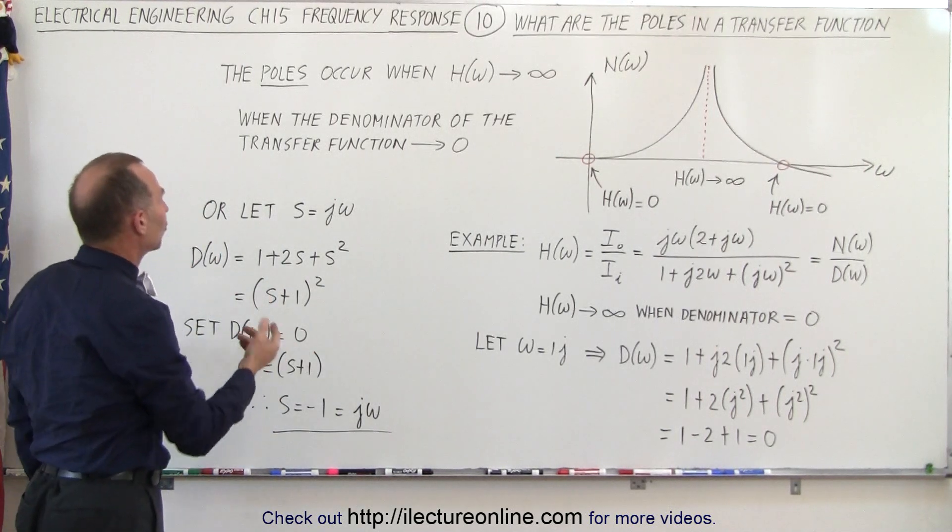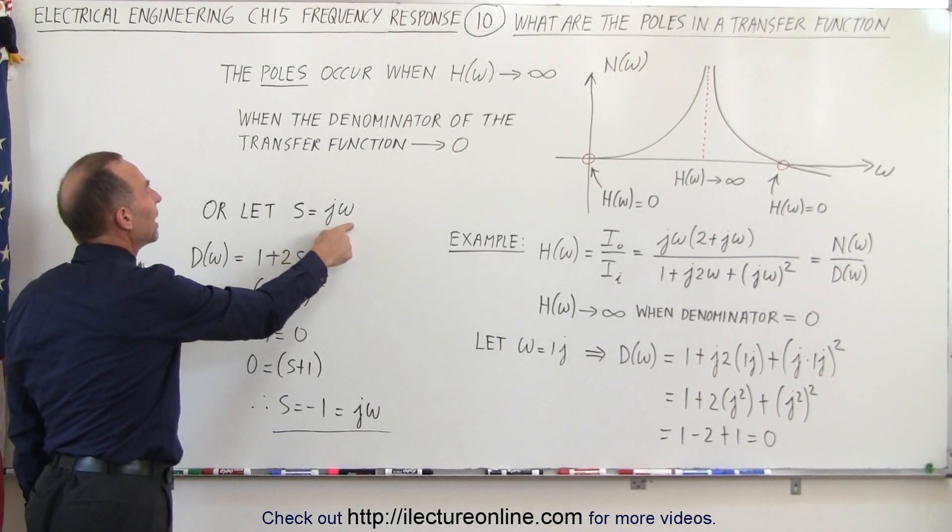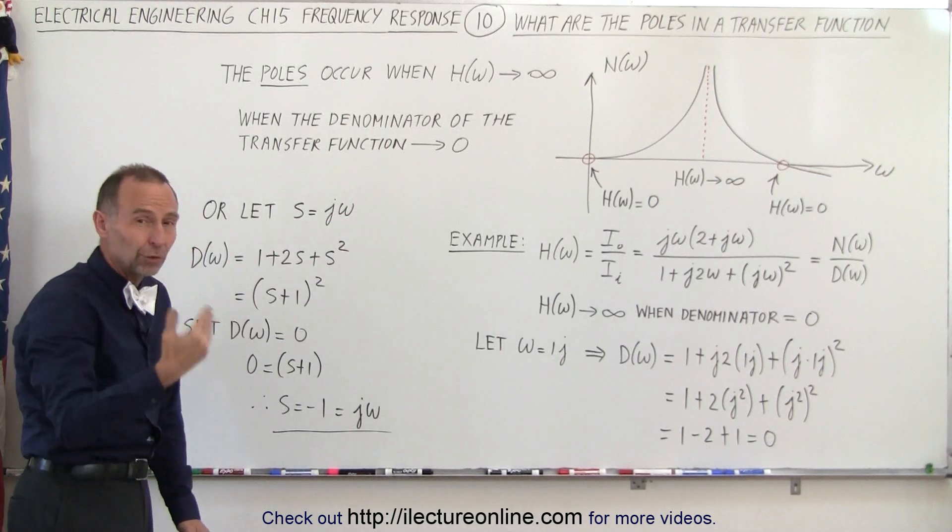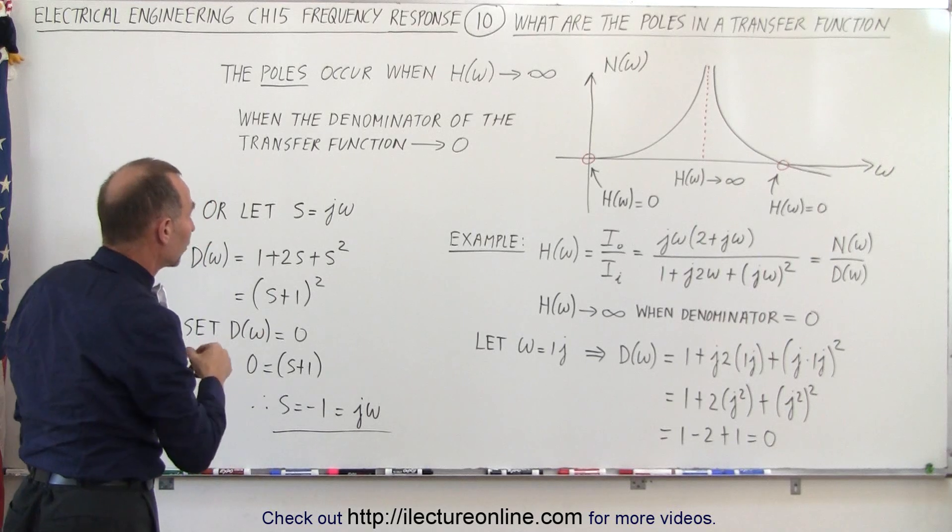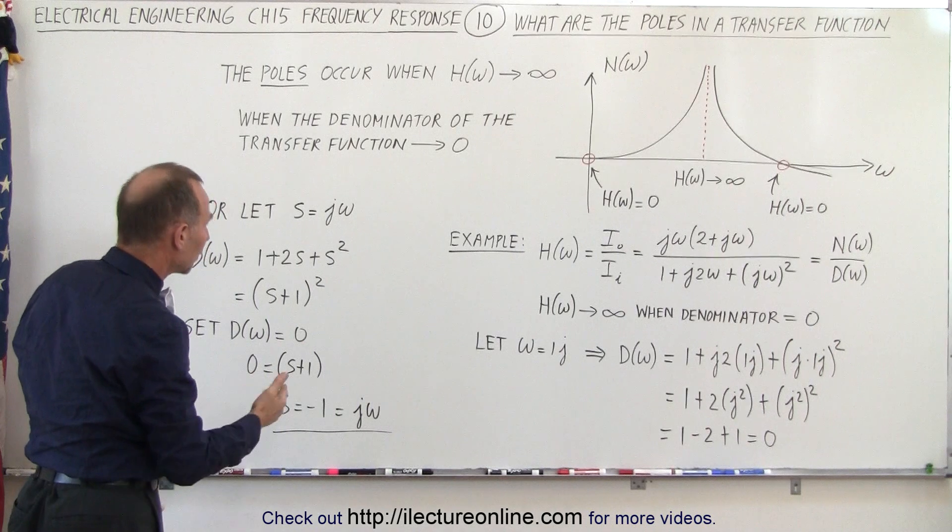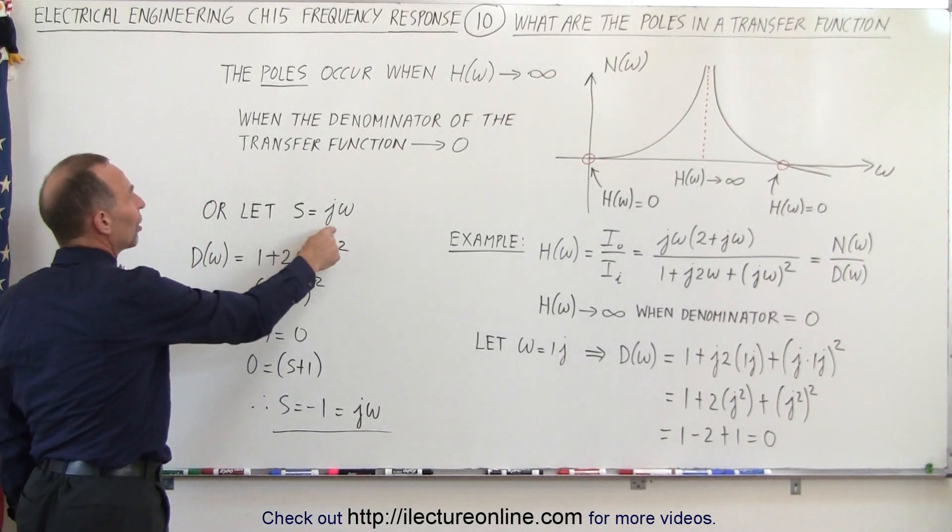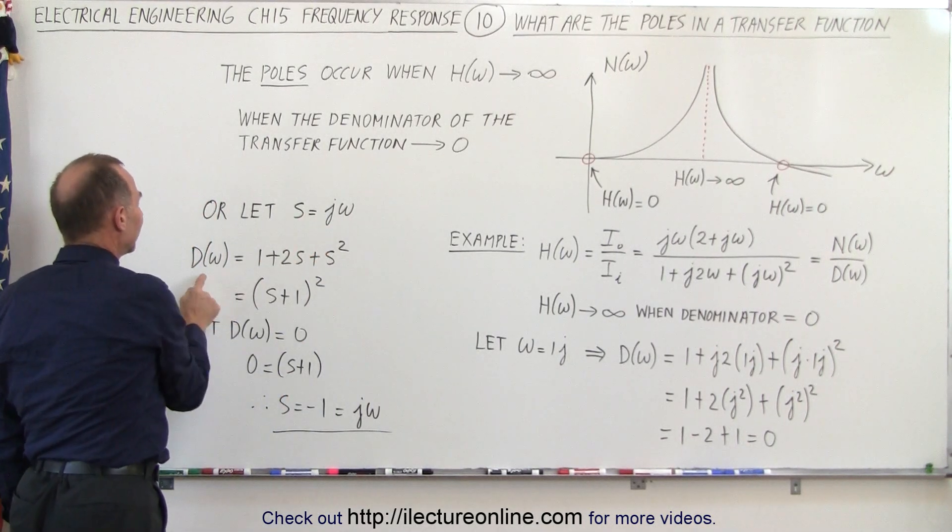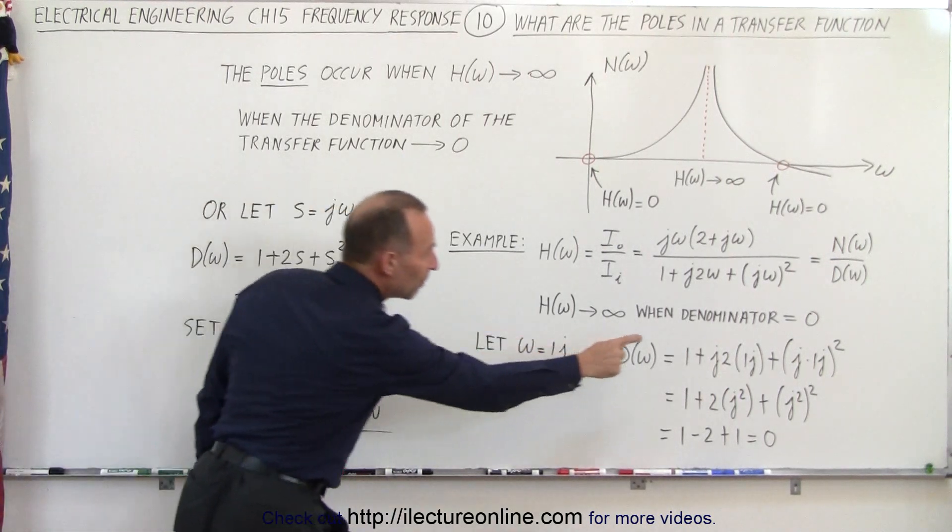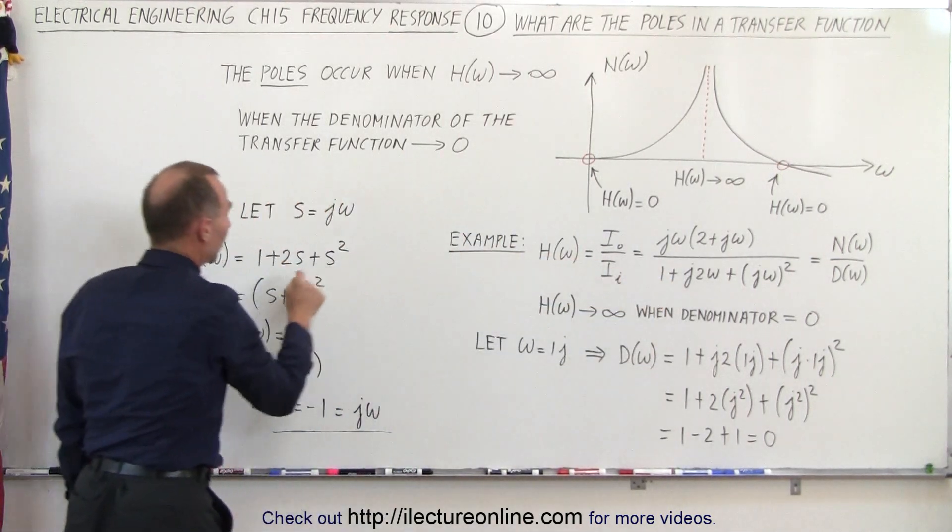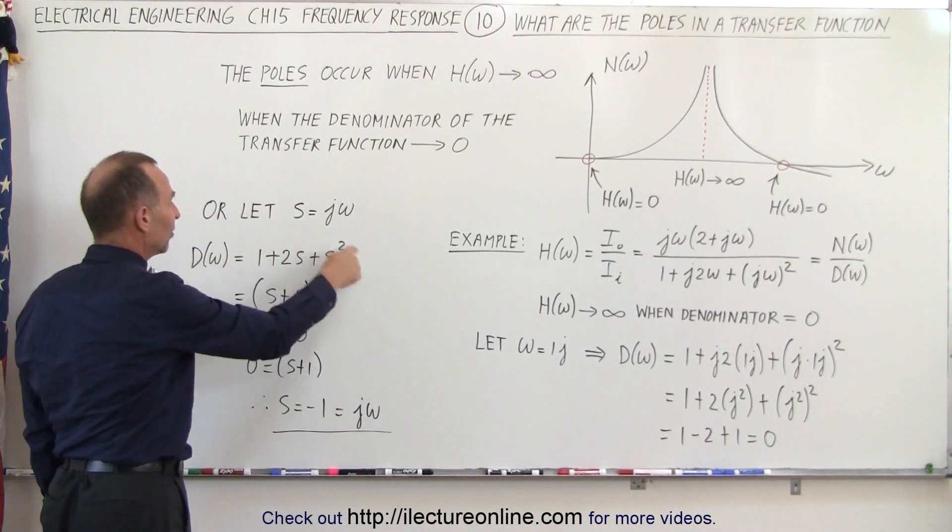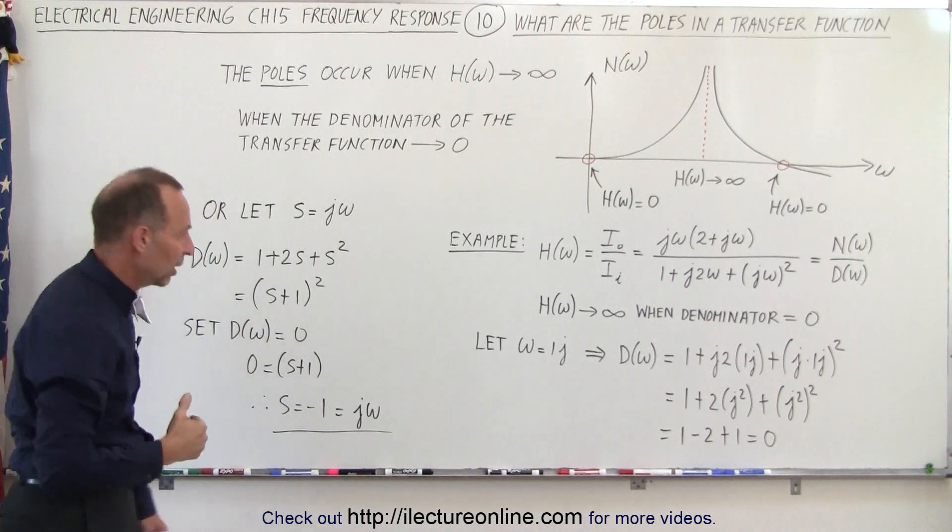Another way of looking at that is to replace j omega by s, just an arbitrary value. Of course s is something that we use for transfer functions, for the Laplace transform, or we can also use it for the Fourier transform. So if we let j omega be equal to s, then the denominator will become 1 plus 2 times j omega, right there, so j omega will then be s, plus j omega squared or s squared. So now you can see we have basically a quadratic equation.